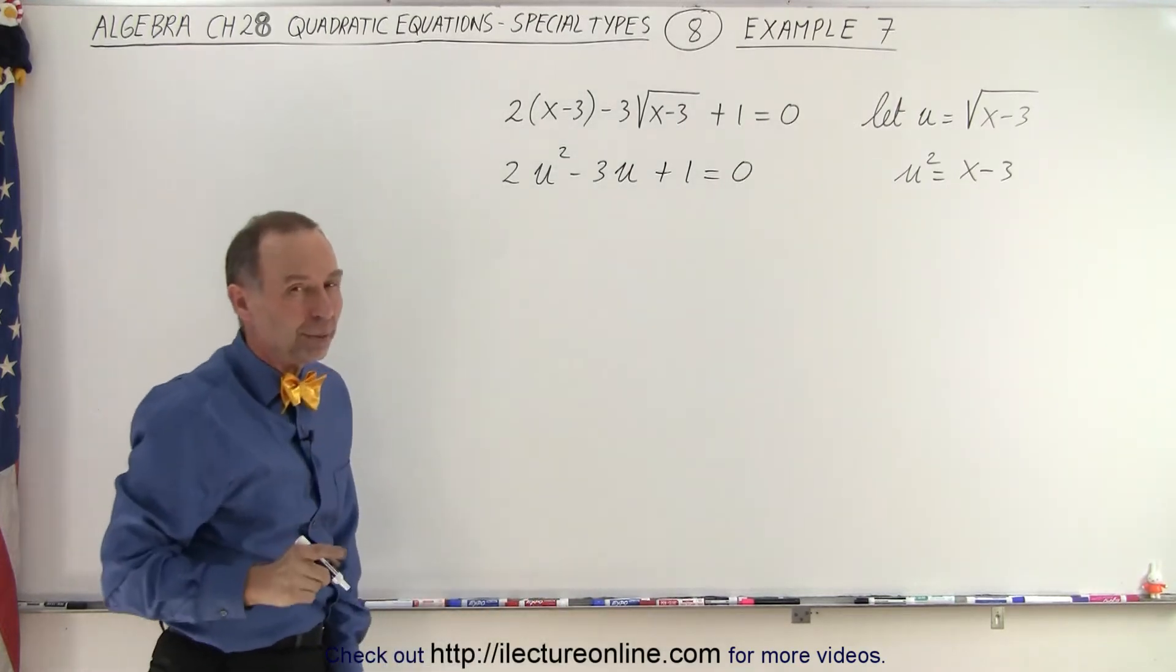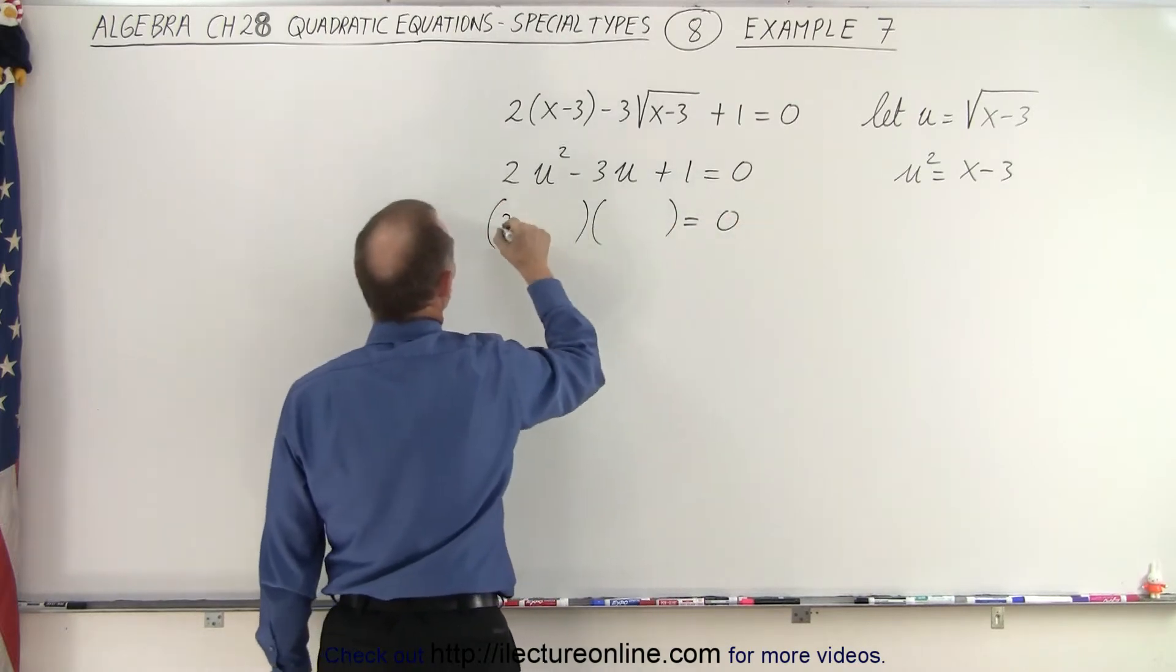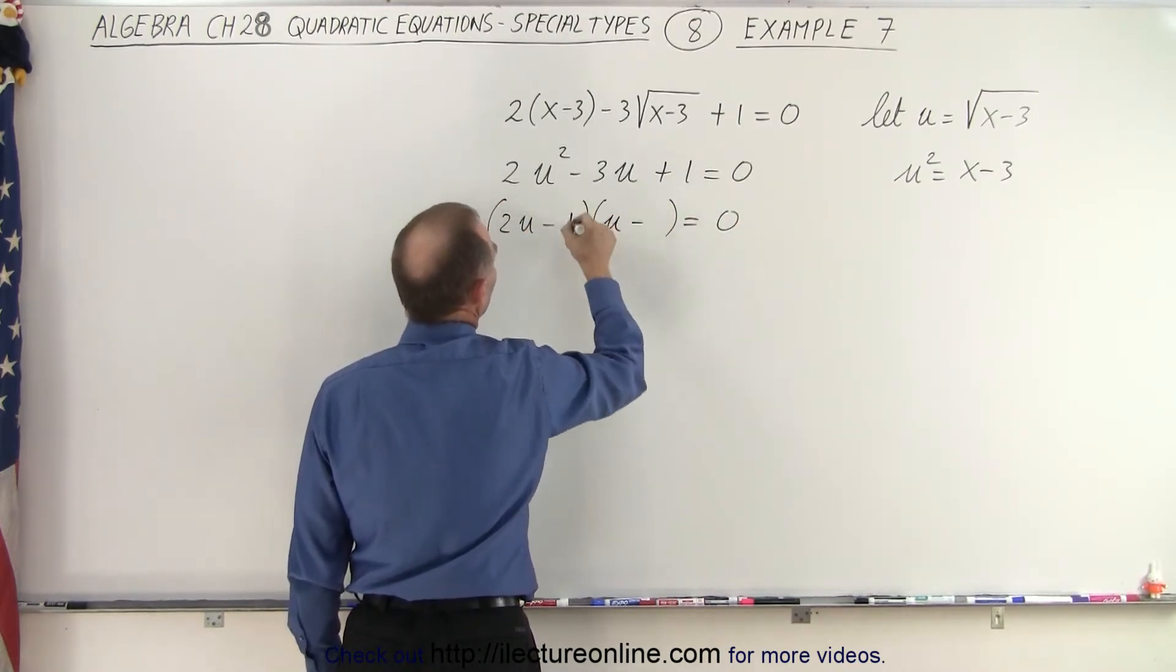And that we can probably factor. So write this as the product of two binomials. We need a 2u and a u. The signs are both negative, and I need 1s.